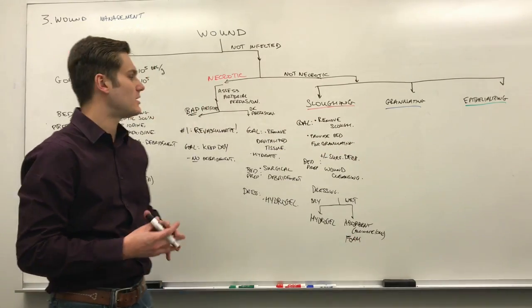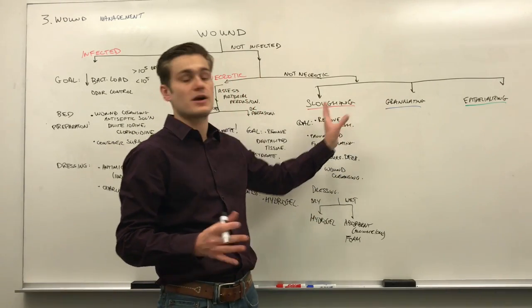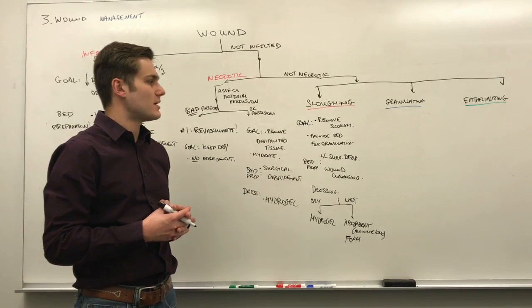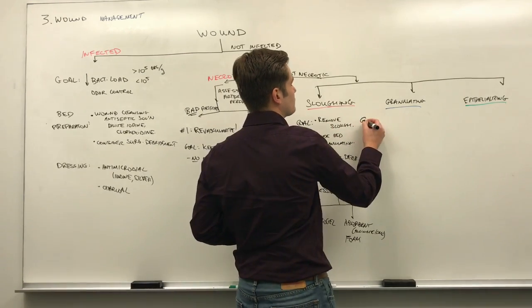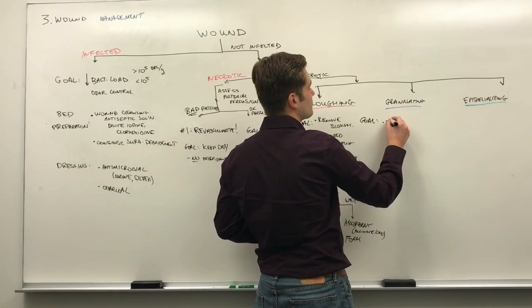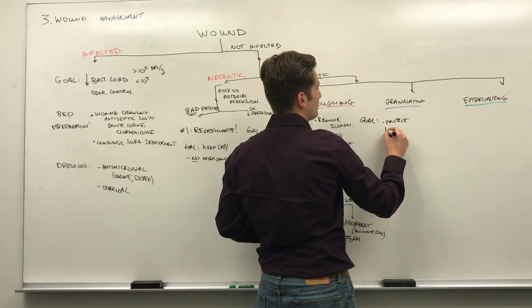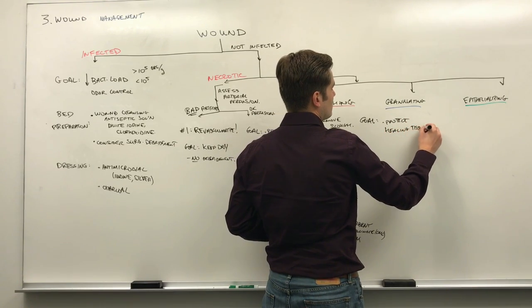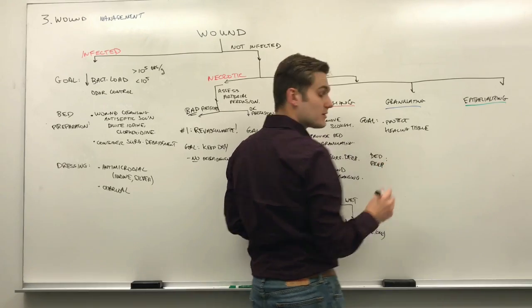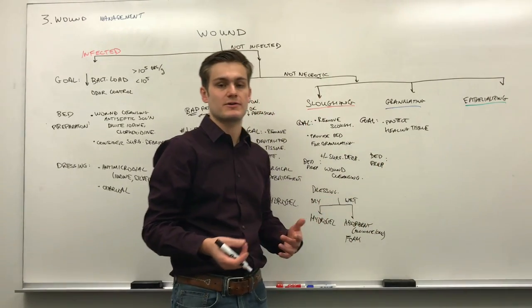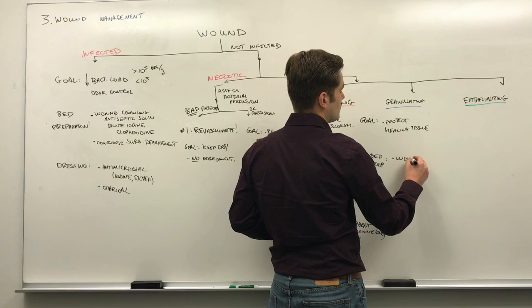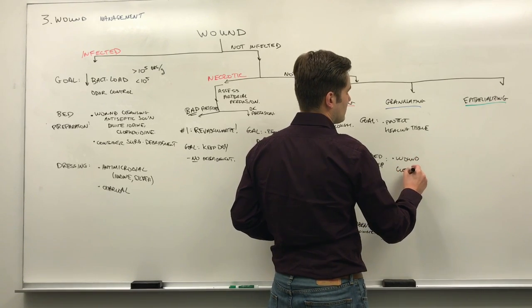Now that we're on to granulating wounds. There's no covering over it. It doesn't have this necrotic plaque over it. It doesn't have a yellow slough. So at this point, we just want to support the body in what it's already doing, which is healing the wound with granulation tissue. So what we're going to do here is just protect healing tissue. For the bed preparation, we're definitely not going to surgically debride this because we don't want to take out any of the tissue. There's nothing for us to take out that's impeding the healing. We might just do some gentle wound cleansing.